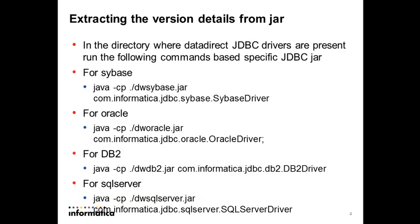Now that we know where to find these jar files, how do we extract the version information? First, go to the directory where these jar files are present — based on whether it is 9.1 or 9.5, you have to go to different directories as shown in the last slide.